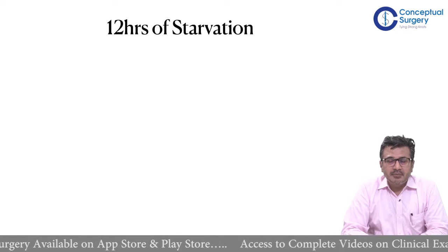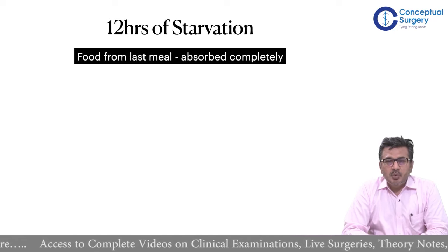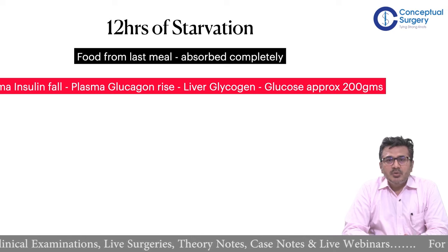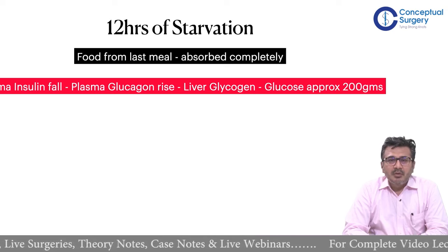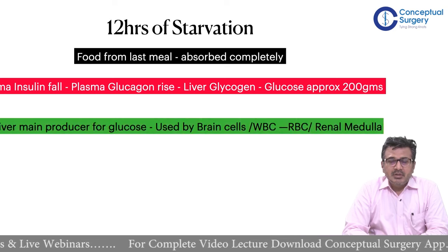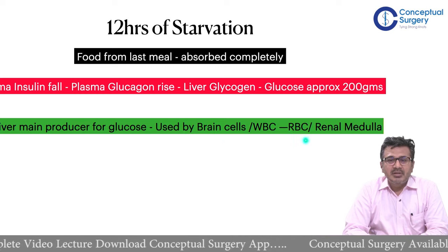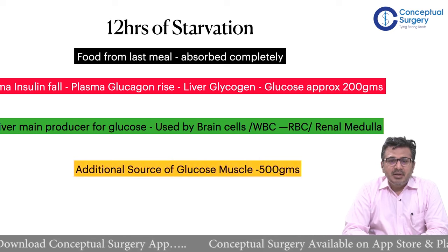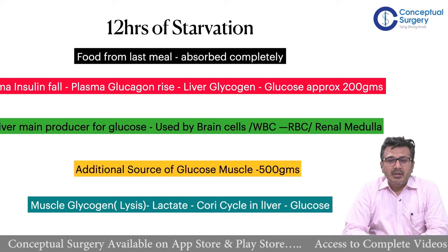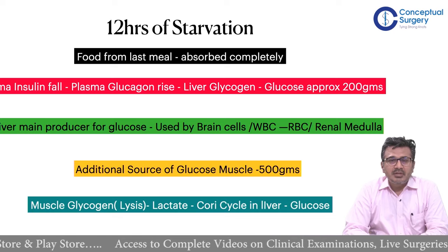Look at this cycle — this is what happens during 12 hours of starvation. If I stop eating today until tomorrow, the first thing is that whatever food I have eaten will start getting absorbed. Post that, my plasma insulin levels will start falling, leading to a respective increase in plasma glucagon levels, and my liver glycogen stores will provide approximately 200 grams of glucose to sustain me. The liver then becomes the main glucose producer, supplying brain cells, white blood cells, red blood cells, and the renal medulla. Additionally, we need another source of glucose which comes from muscles, providing about 500 grams — muscle glycogen is broken down to lactate via the Cori cycle, resulting in liberation of glucose. So glucose comes from two sources: breakdown of liver glycogen and from the muscles.